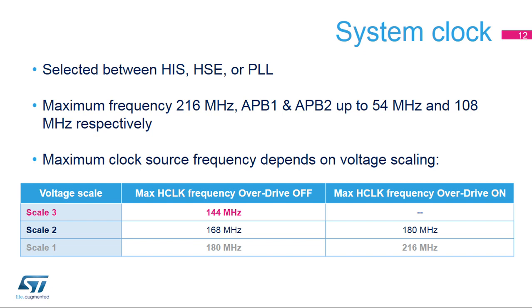The maximum system clock frequency is 216 MHz. The APB1 and APB2 bus frequencies are also up to 54 MHz and 108 MHz respectively. The maximum clock source frequency depends on the voltage scaling. The maximum system clock is reached with voltage scale 1 and when enabling overdrive. When overdrive is off, the maximum system clock frequency is 180 MHz.